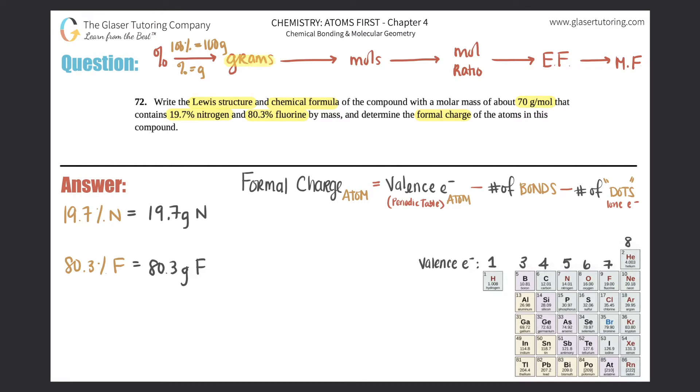Now we need to go to moles. How do we go from grams to moles of something? Well, that's the conversion we learned back in chapter two. One mole of anything equals the molar mass in grams of that same thing, and that's on the periodic table.